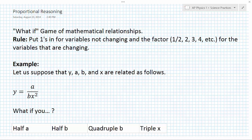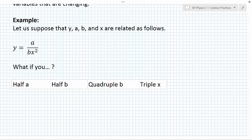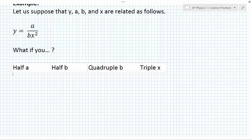Let's suppose that these four variables, y, a, b, and x, are all related as follows: y is equal to a over bx squared. The proportional reasoning game asks you, what if you changed one of these by a certain factor? What would happen to y? Let's ask, what would happen to y if we halved a?